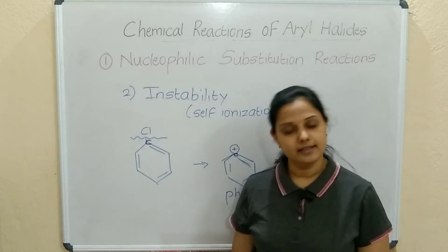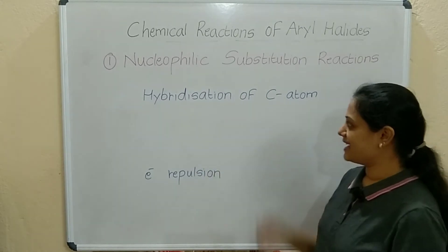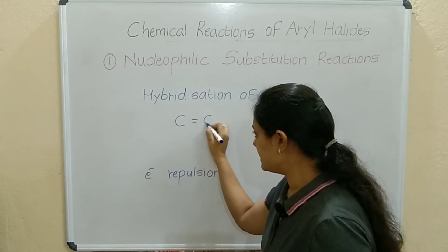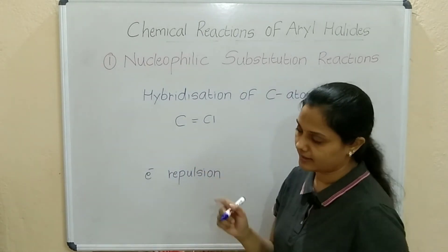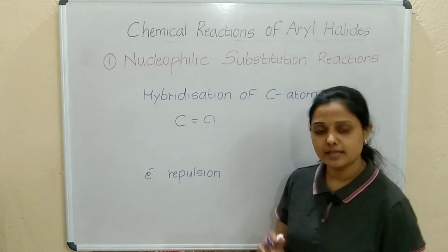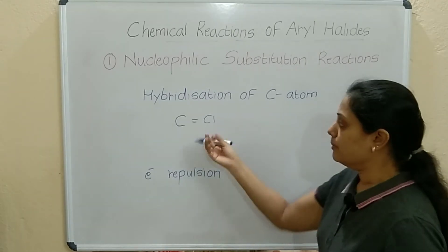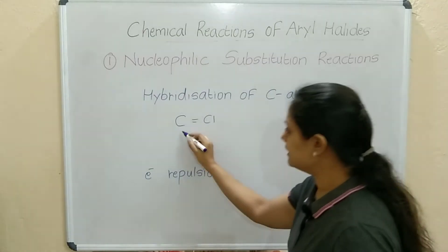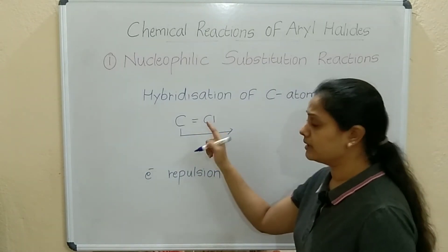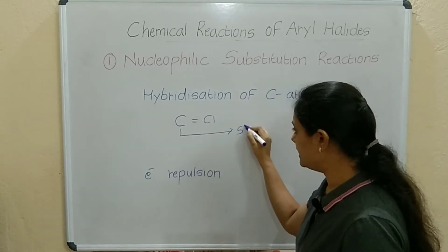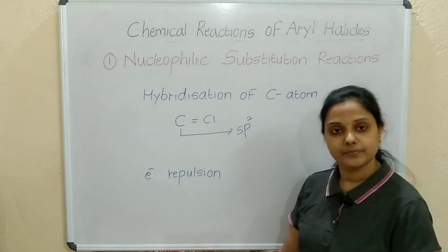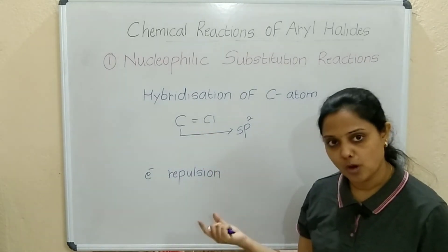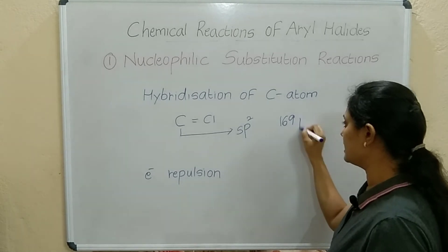The next reason is hybridization of the carbon atom. As mentioned, during resonance a double bond is created between the carbon in the benzene ring and the chlorine in chlorobenzene. More bond order means smaller bond length. Since this carbon is attached to chlorine with a double bond, the hybridization of this carbon will be sp2. The bond length is 169 picometers.